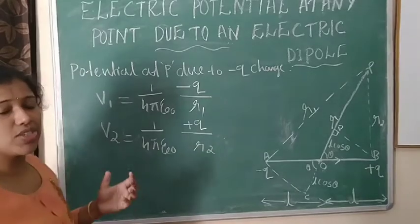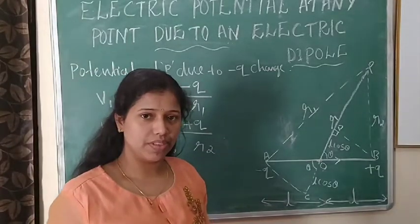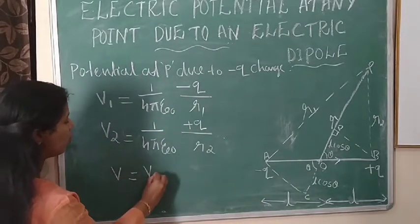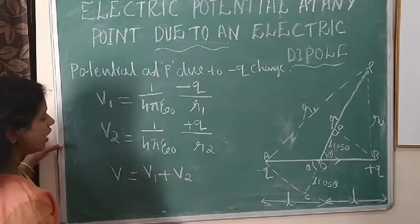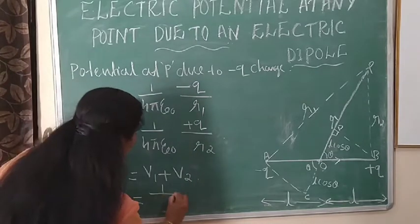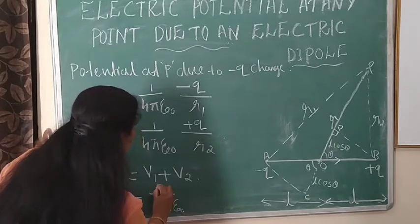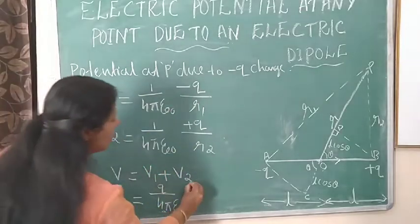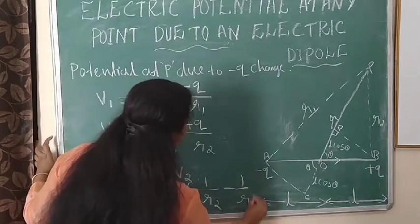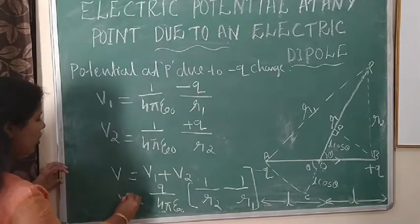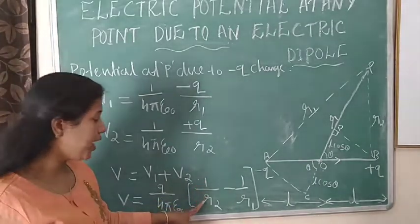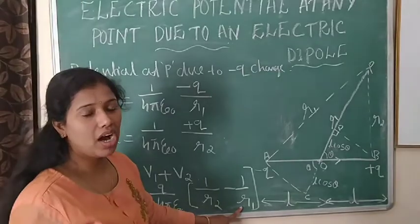According to the superposition principle, the total potential V is equal to V1 plus V2. Substituting and taking the common factor outside: V is equal to Q divided by 4 pi epsilon naught, into 1 by R2 minus 1 by R1.